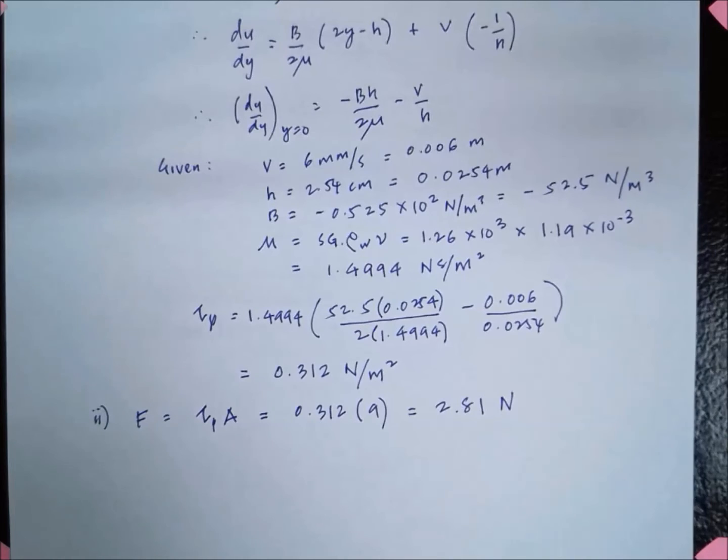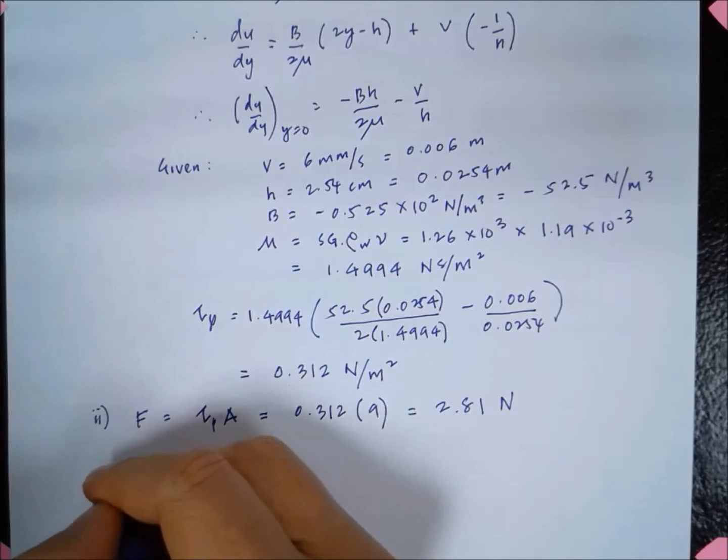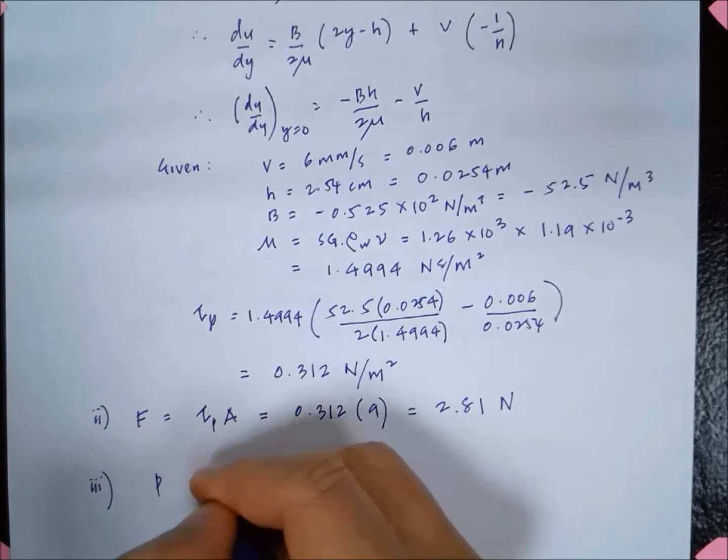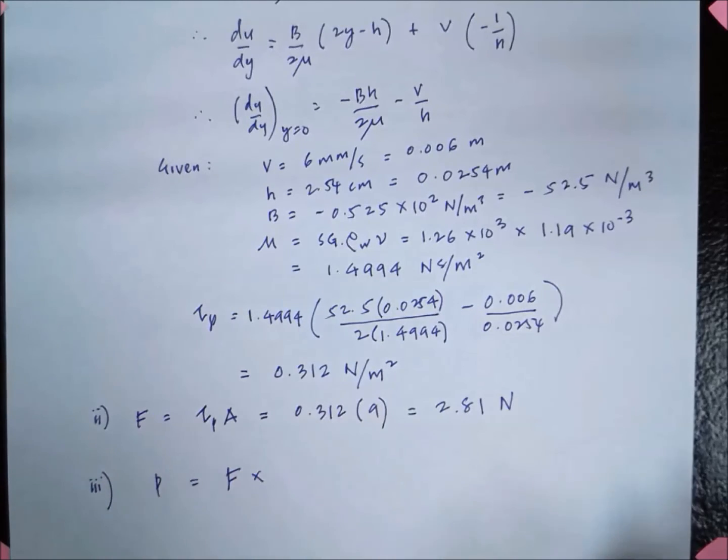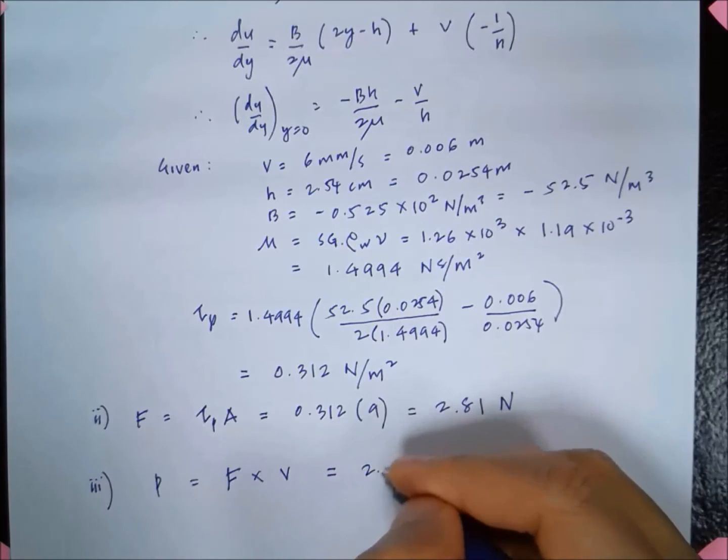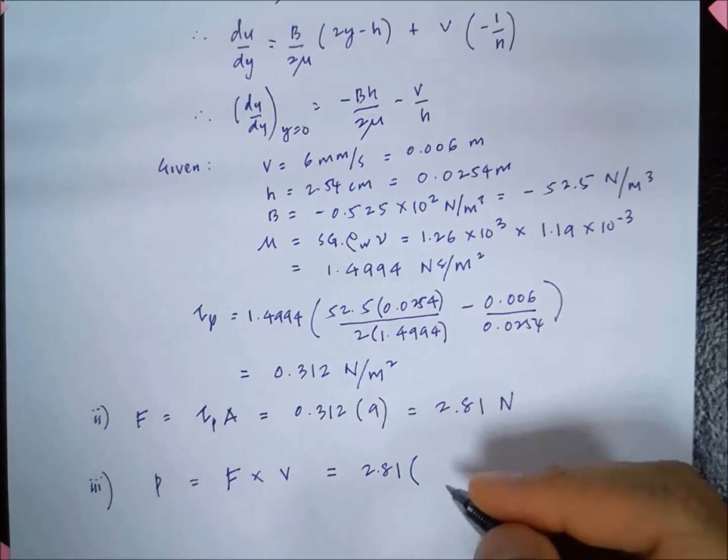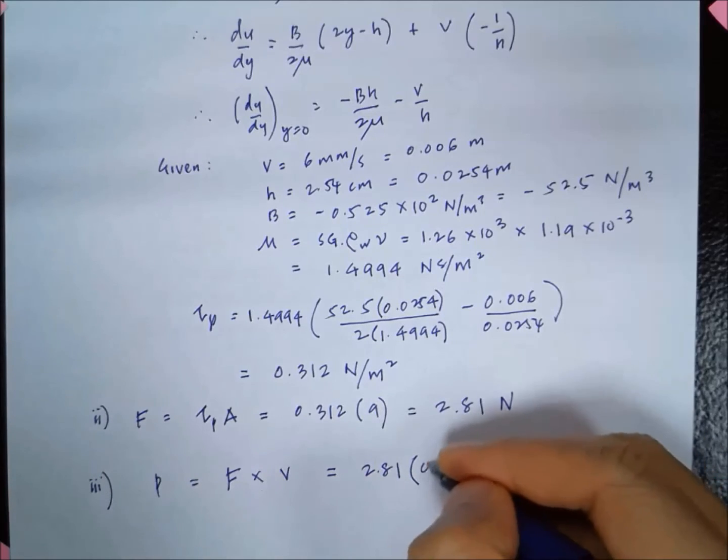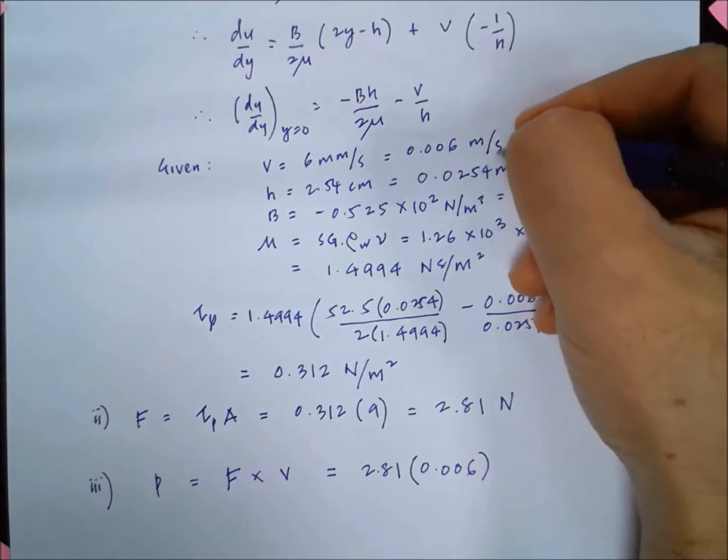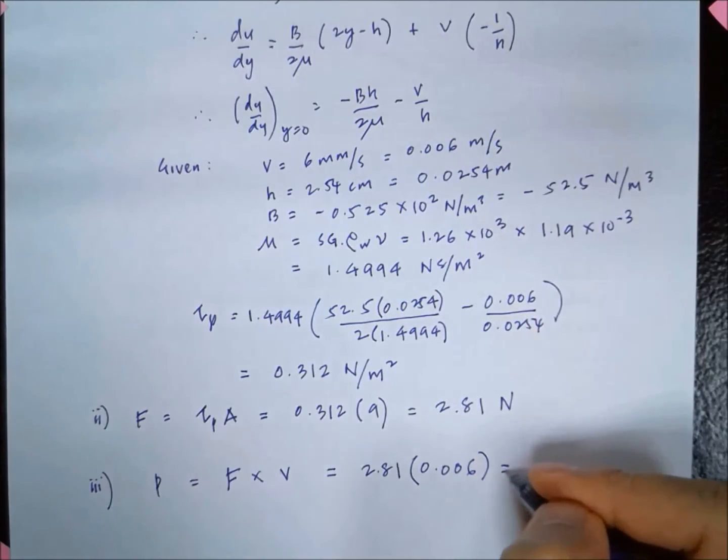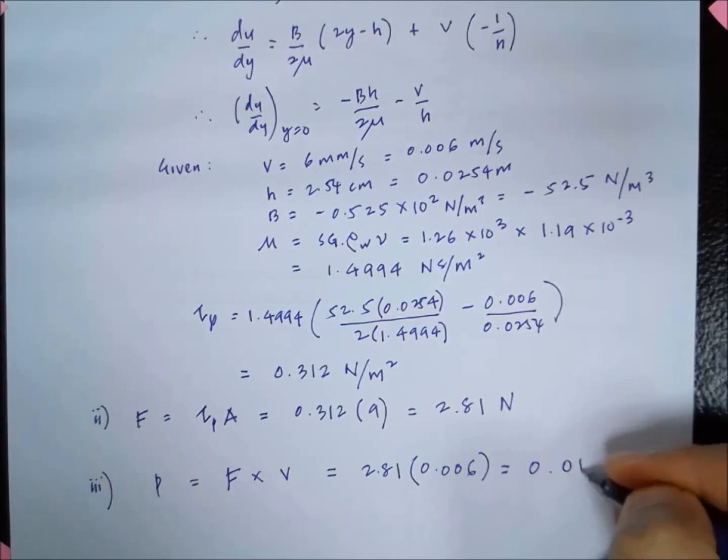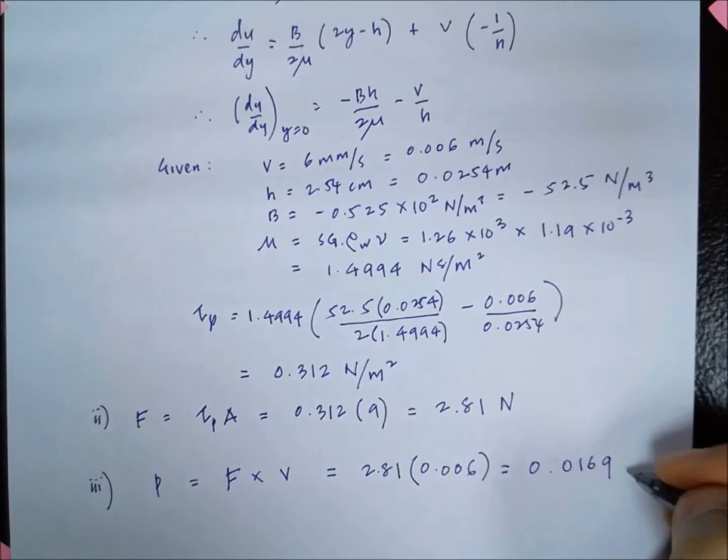The final part of the question is calculating the power. Power is force multiplied by velocity, so that is 2.81 multiplied by 0.006 meter per second. That gives us 0.0169 watt.